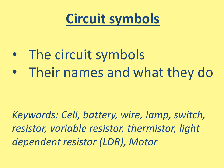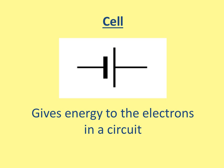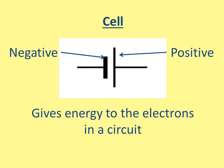This is a cell. Most people think they have two batteries in their remote control at home, but actually they have two cells. Cells are used to give energy to the electrons in the circuit — when electrons pass through the cell they gain energy, allowing them to flow around the circuit. There are two parts: the left-hand side is short and fat, which is the negative side, and the other side is long and thin, which is the positive side.